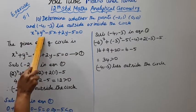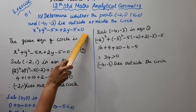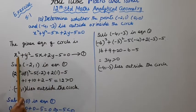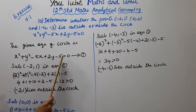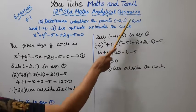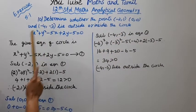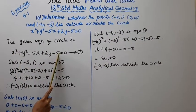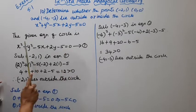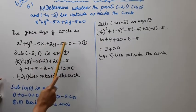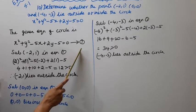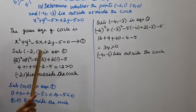The equation is x squared plus y squared minus 5x plus 2y minus 5 equal to 0. This is very easy. The given equation of a circle is x squared plus y squared minus 5x plus 2y minus 5 equal to 0. In the points, we substitute the x and y values. If the answer is greater than 0, the point lies outside the circle. If the value is less than 0, the point lies inside the circle.